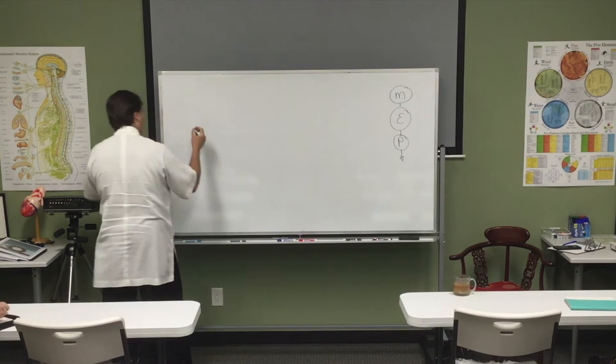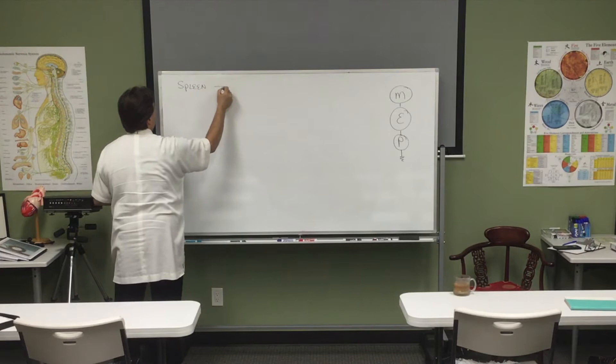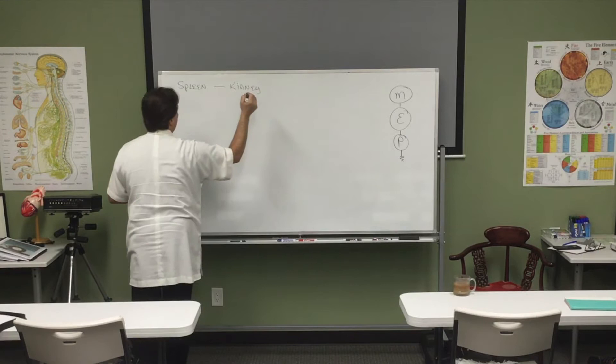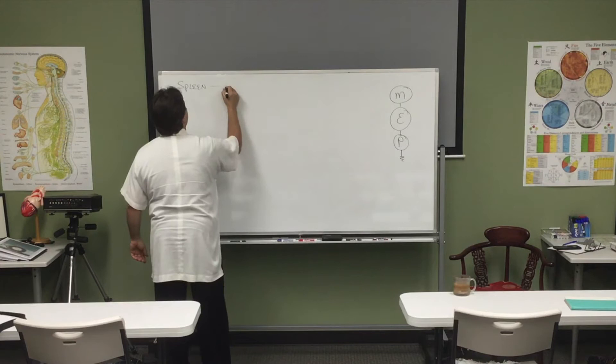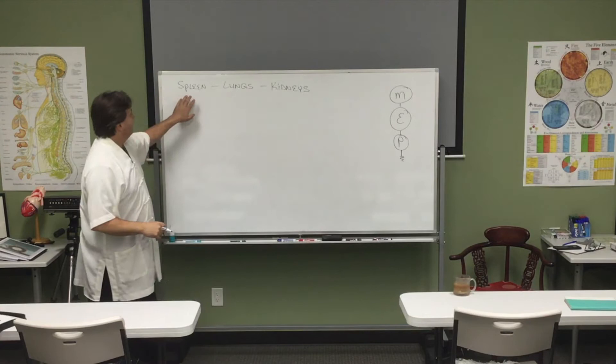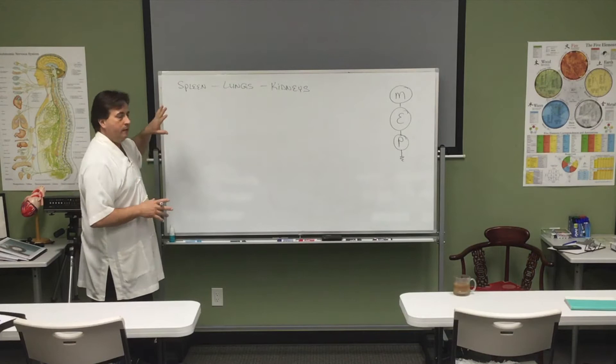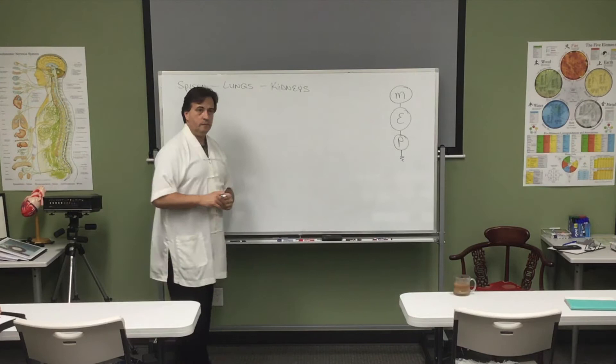So spleen, lungs, and then kidneys. That fall, right before fall, Indian summer kind of time, is spleen energy. So this is like mid-August to September, mid-September, right before the fall. Lungs fall, and then kidneys winter. We've been looking at that this way.